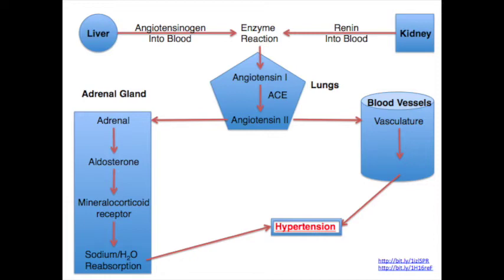Angiotensin-2 is a vasoconstrictive hormone that causes vasoconstriction within the blood vessels of the body. Angiotensin-2 also causes the release of aldosterone from the adrenal gland, which then binds to the mineralocorticoid receptor. This binding causes a reabsorption of sodium and water. This reabsorption and the vasoconstriction are what cause hypertension.